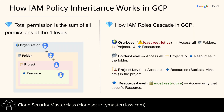Have you ever assigned IAM permissions in GCP thinking they were limited to just one resource, only to find out later that someone had access to way more than expected? That's because IAM in GCP follows a hierarchical inheritance model, which means permissions automatically flow down from higher levels. If you assign a role at a higher level, it applies to everything underneath it.